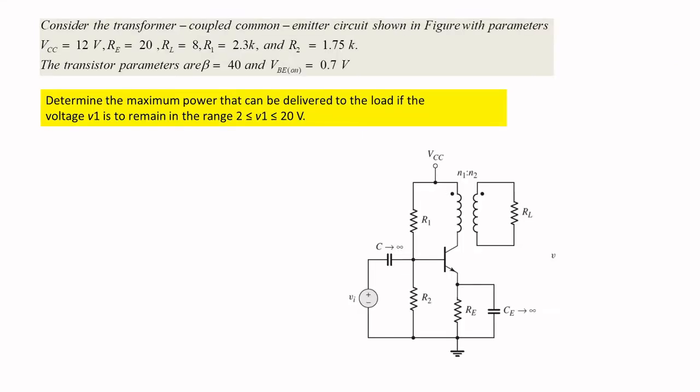The given problem is, consider the transformer coupled common emitter circuit. The parameters are Vcc = 12V, Re = 20kΩ, RL = 8Ω, R1 = 2.3kΩ, and R2 = 1.75kΩ. The transistor parameters are β = 40 and VBE = 0.7V.